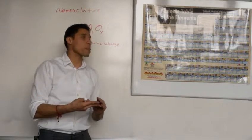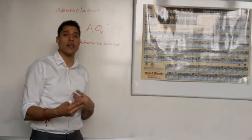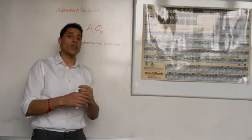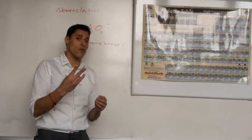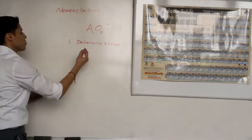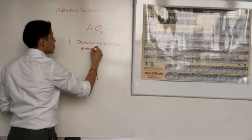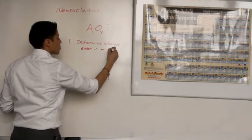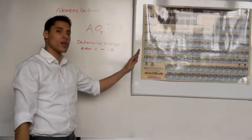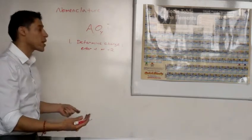The only exception is a phosphorus oxyanion — so like phosphate, phosphide, hypophosphite for example. They will always have a negative 3 charge. So phosphorus is the only exception with a negative 3 charge. Either a negative 1 or negative 2 for all non-metal oxyanions; the only exception again is a phosphorus oxyanion.